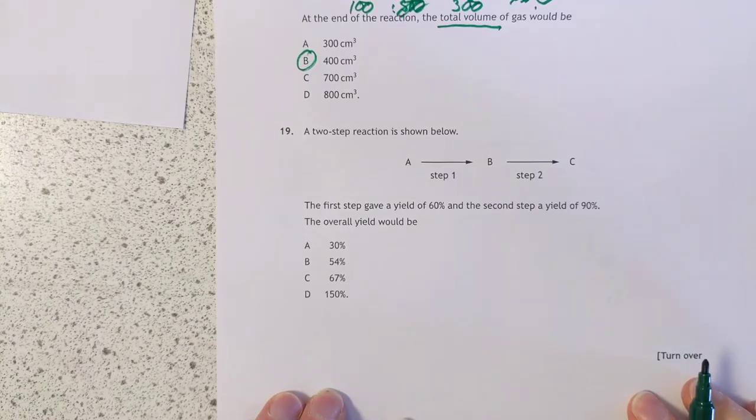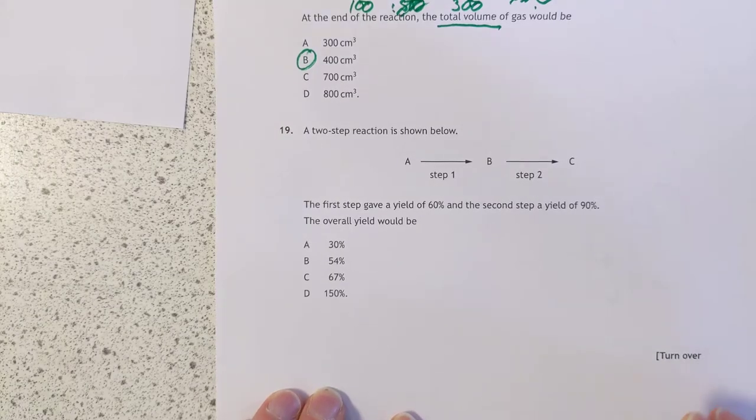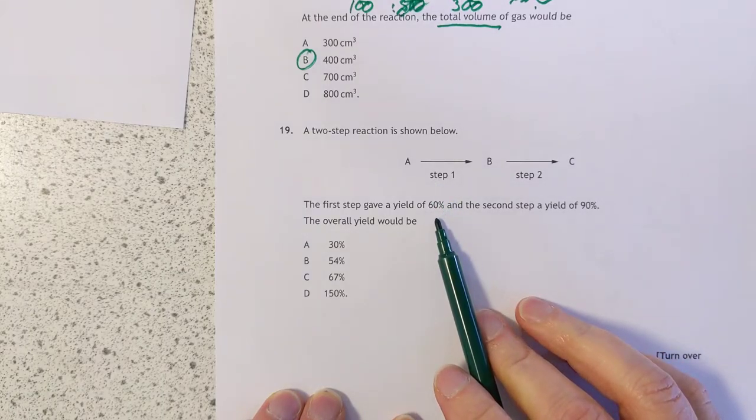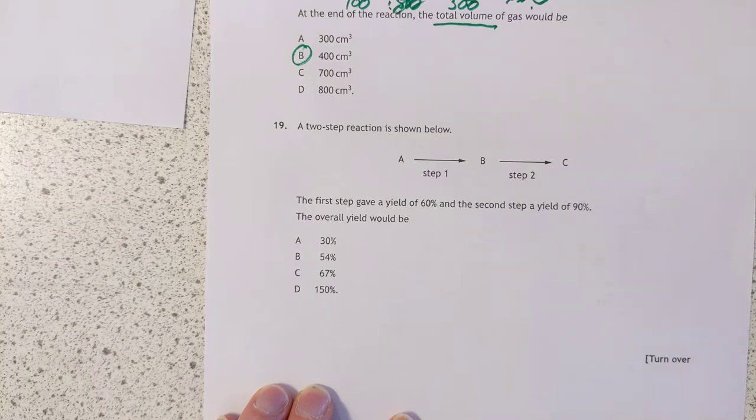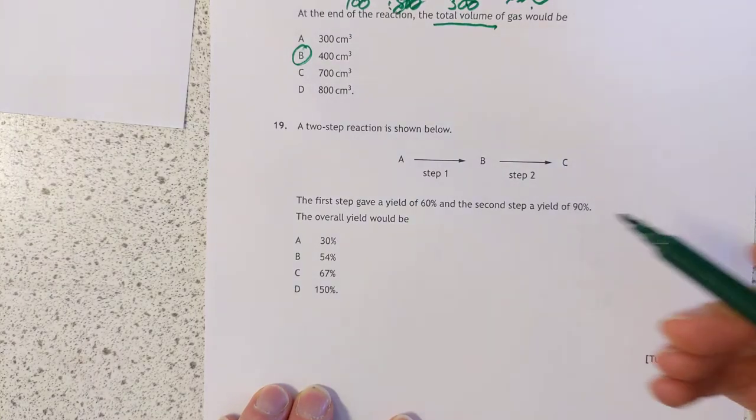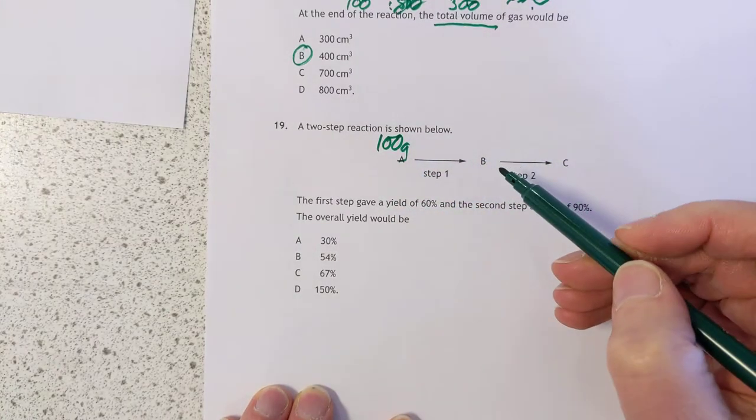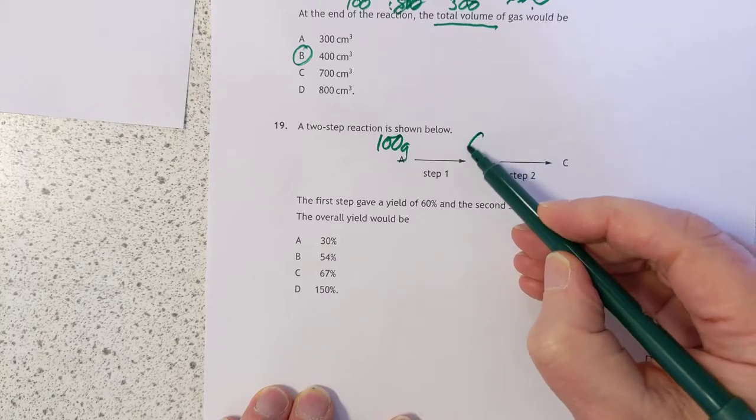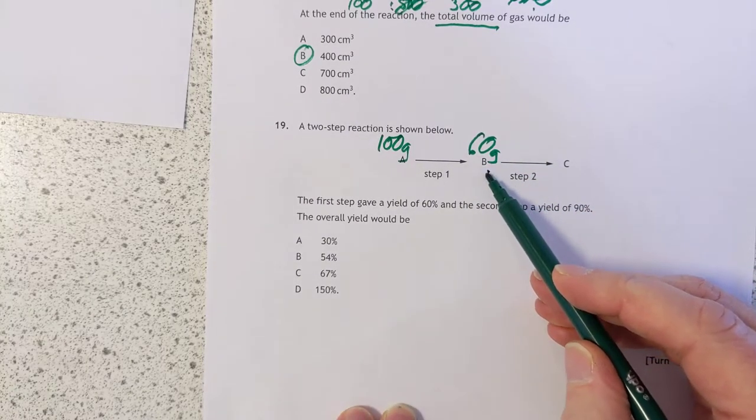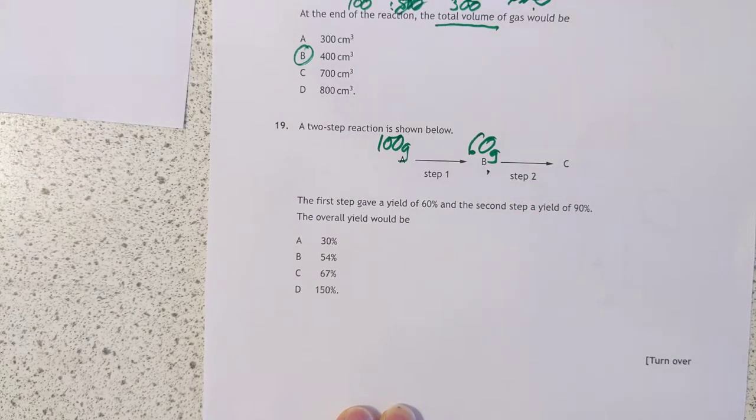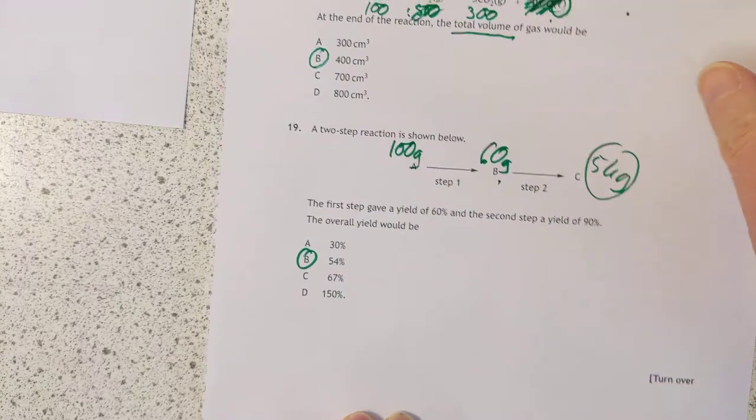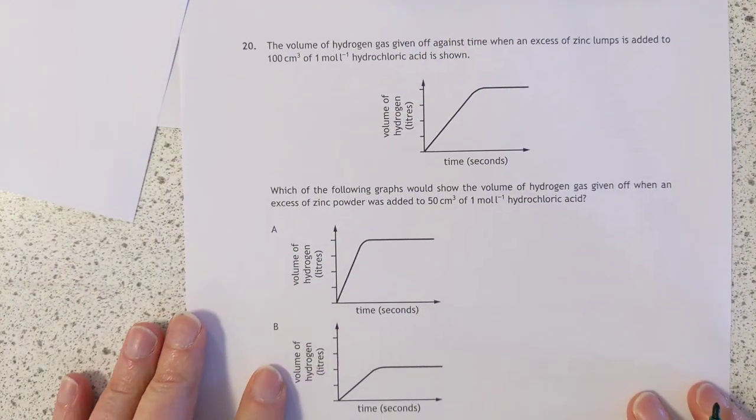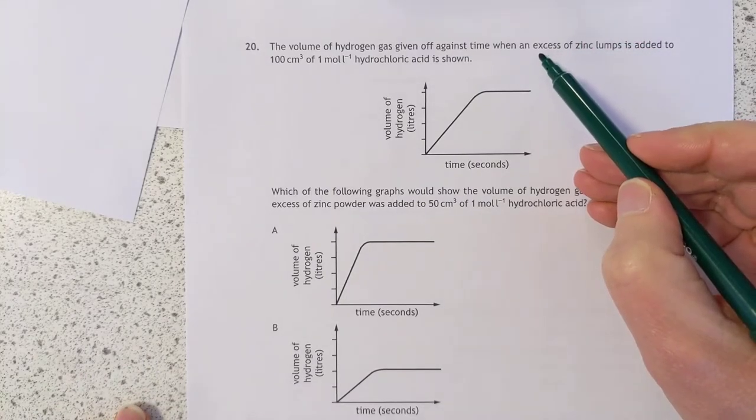Question 19: Two-step reaction shown below. Step one has a yield of 60%, step two a yield of 90%. This isn't a chemistry question, SQA. This is a maths question. If we start with 100 grams, at the end of step one we'll have 60 grams of product. And then this is 90%, so all we need is 90% of 60, which is 54 grams. That's how much I've got left. What a stupid question in chemistry terms.